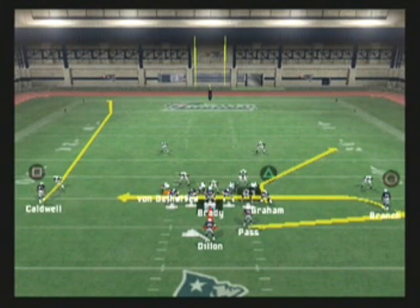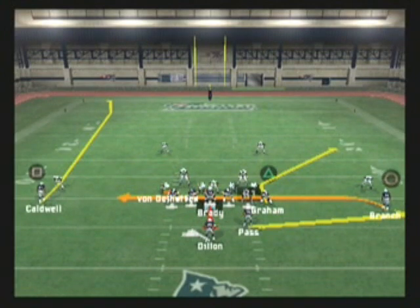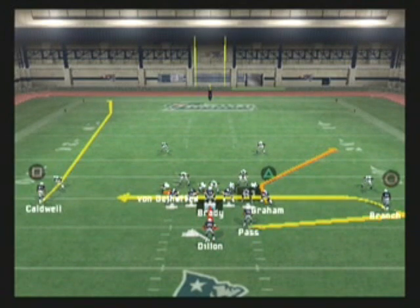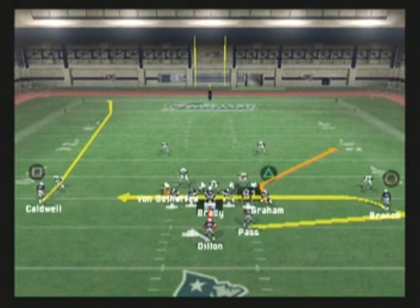The first player we want you to focus on is wide receiver Dion Branch on the far right side of the field. This is the receiver that we'll be sending in motion momentarily. Once we have sent this receiver in motion, the first read on the field is fullback Patrick Pass as he moves into the flats on the right side. If this receiver is not open, then we look to hit tight end Daniel Graham as he heads on the corner route. If these first two options are both taken away, we either look to go deep to Caldwell or back across the field to Dion Branch.